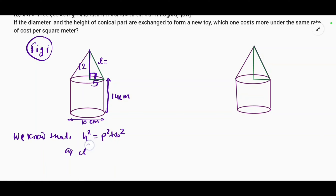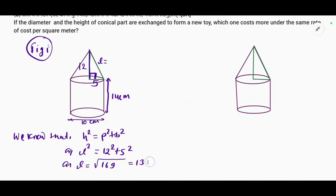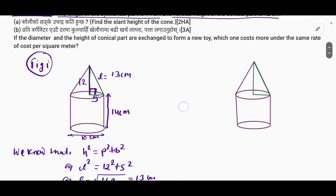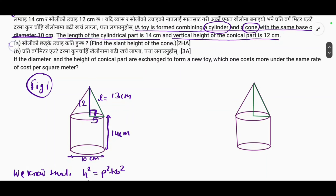Solving the equation, l is equal to 13 cm. We know that the slant height figure of 13 cm gives us our answer for l.